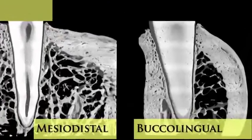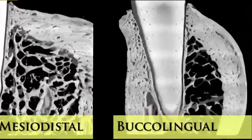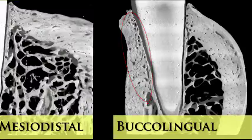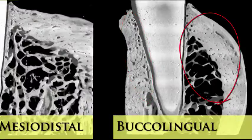In the buccal-lingual view, we can clearly see the lack of homogeneity between the buccal areas, which virtually only have cortical bone, and the lingual area, which has both cortical and trabecular bone.